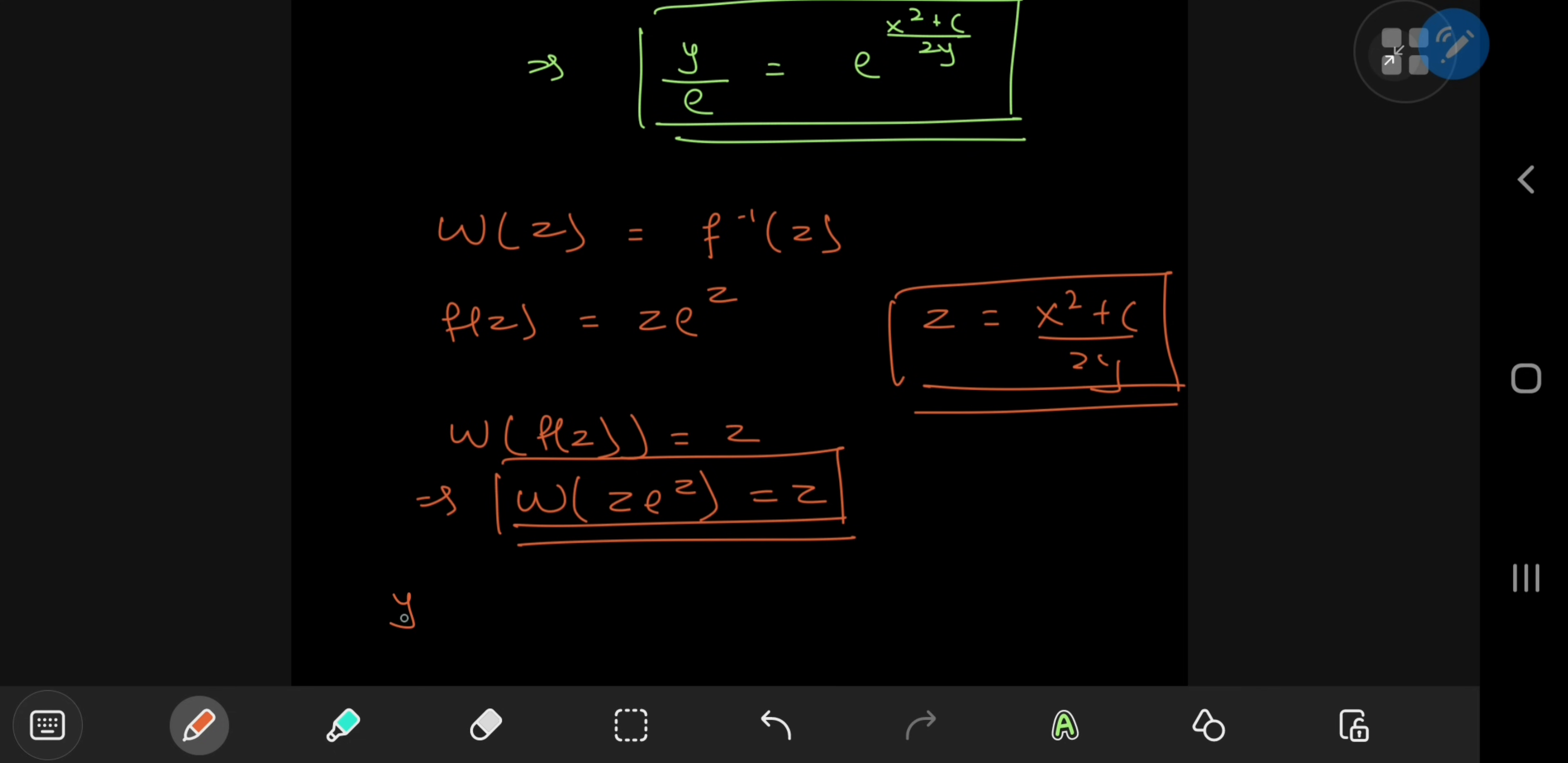So that means I have (y/e) times (x squared plus c) divided by 2 times y equal to (x squared plus c) divided by 2 times y times e to exactly the same thing. Okay cool.